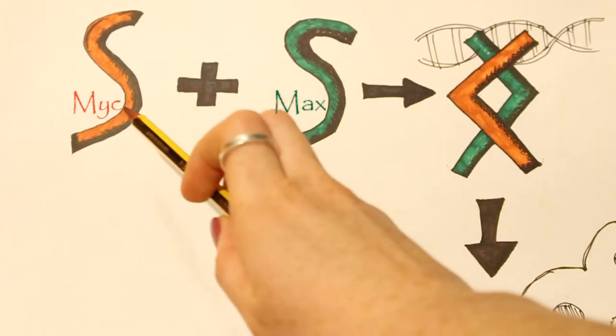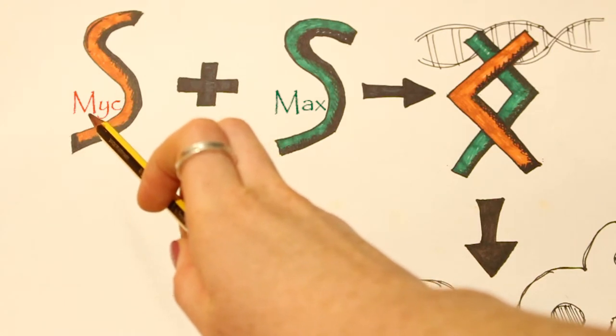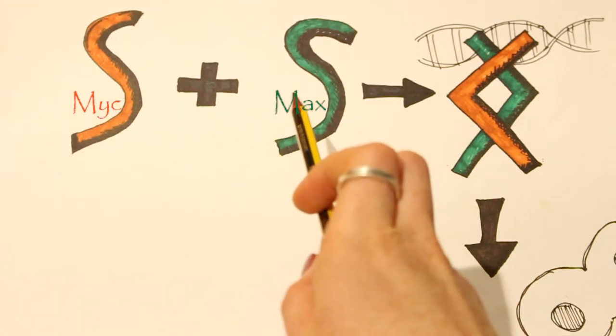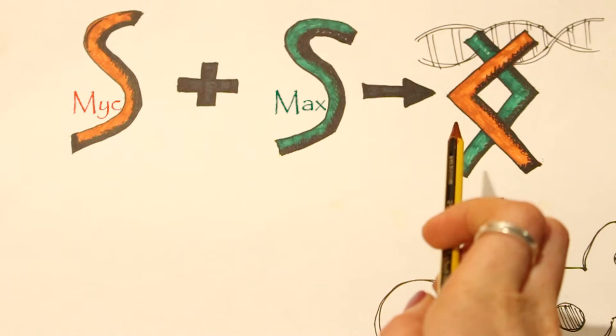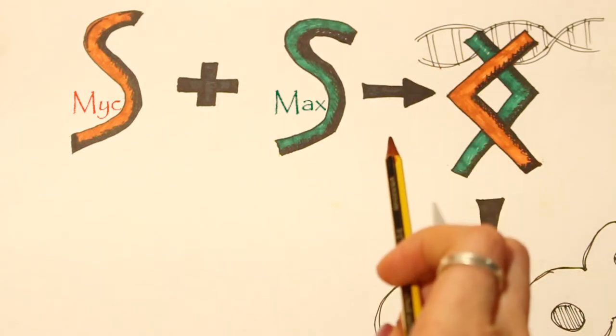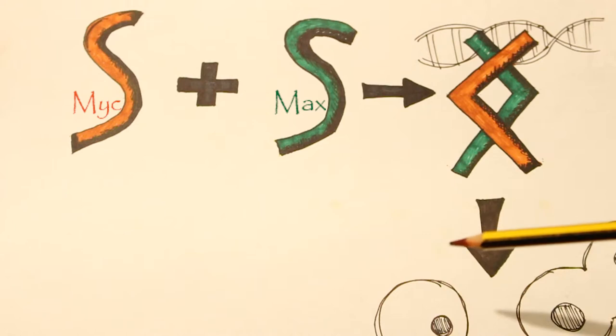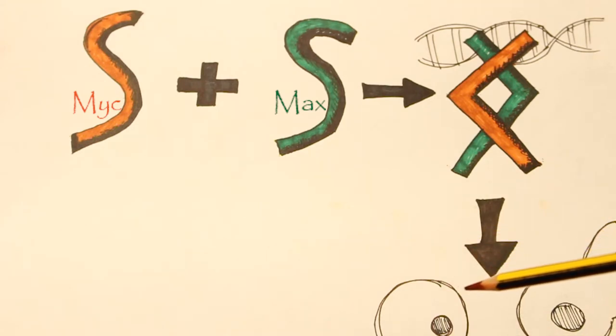In our cells, we have a protein called myc. When it binds its partner max, this allows myc to change shape, which means it can bind your DNA. Binding your DNA allows myc to cause your cells to grow and divide at a faster rate.